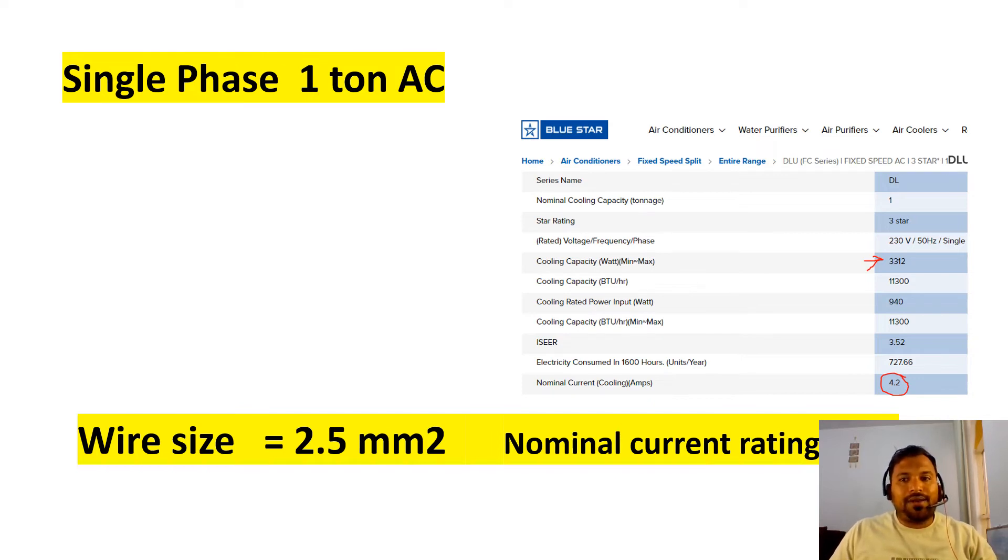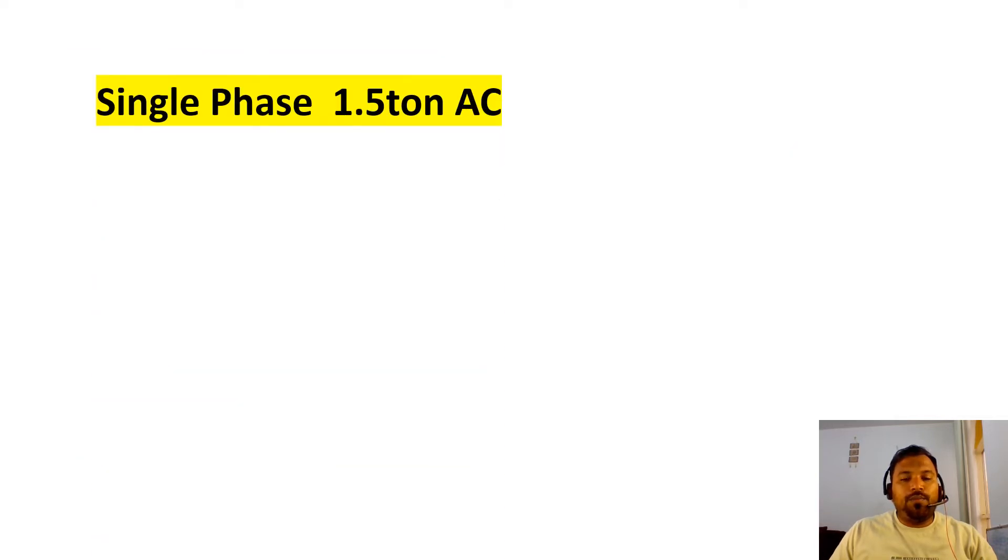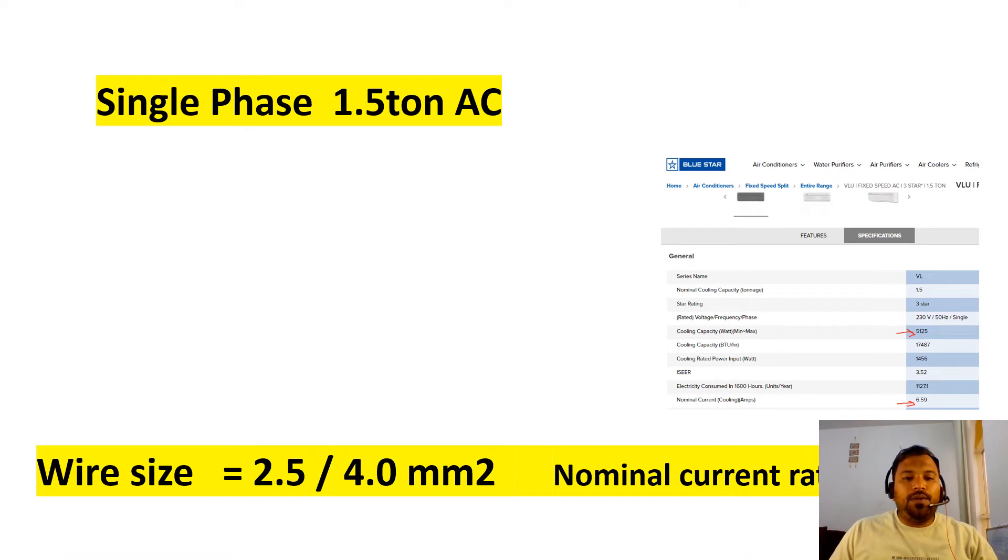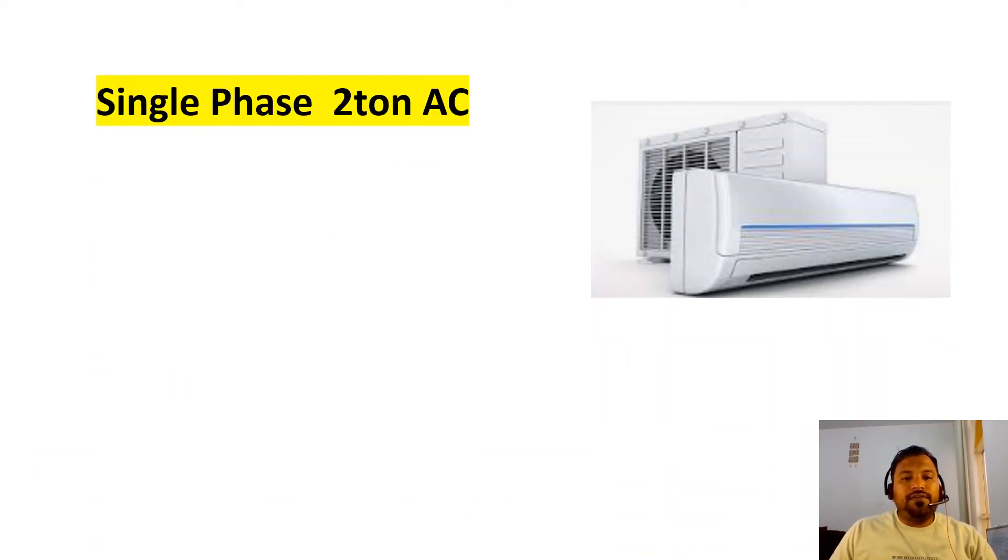Now let's see the next. 1.5 ton AC. 1.5 ton AC will be recommended 2.5 or 4 mm square. My recommendation, you will go with the 4 mm square.